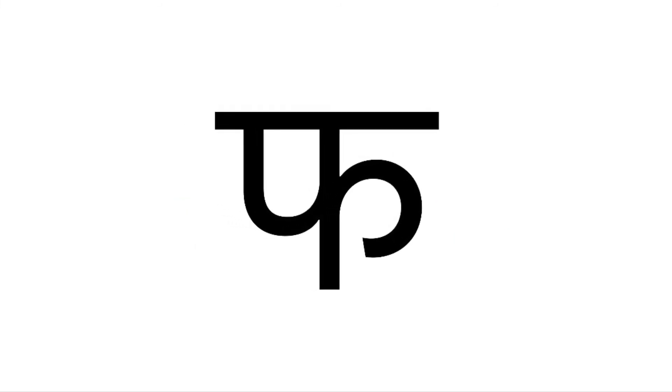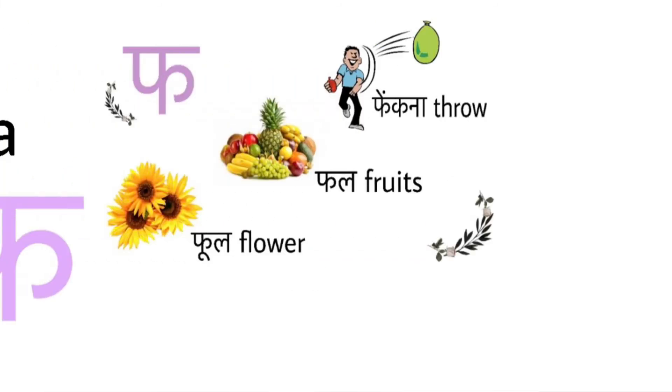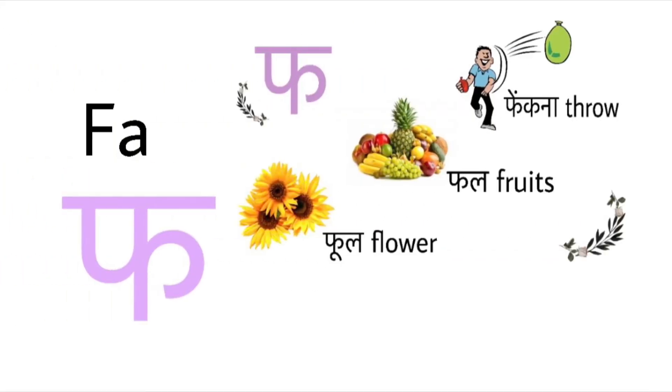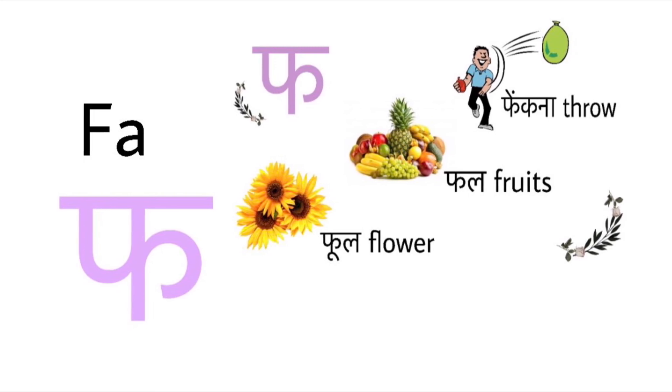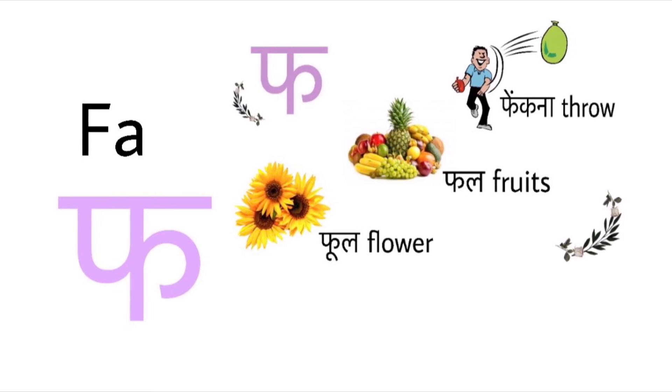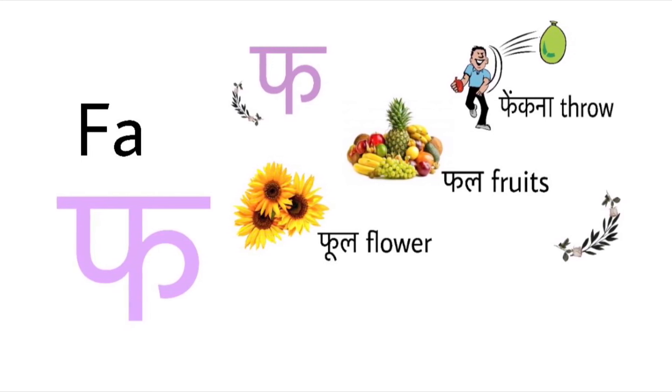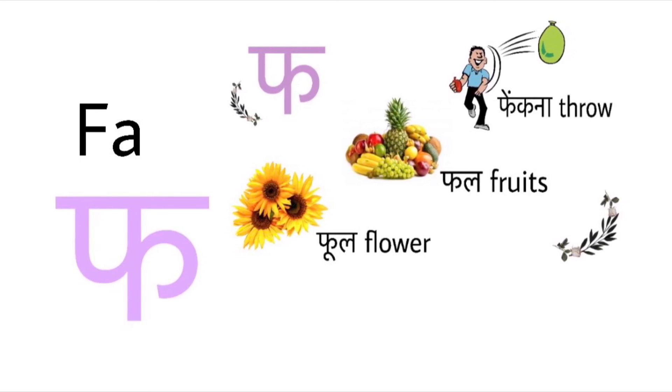Let's revise once again. Fuh for Fekna means throw, Fuh for fall means fruit, and Fuh for food means flower.